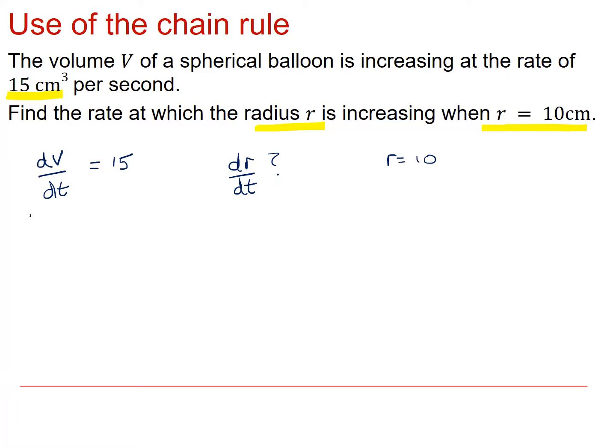OK, we know something about V. We know the volume of a sphere is 4 thirds pi r cubed. And that means I can work out dV by dr. Just differentiating that, I get 4 pi r squared.